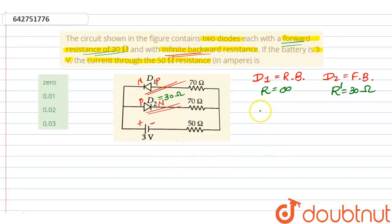So let's draw our final circuit. Our final circuit will be: this is 30 ohm, this is 70 ohm, this is 50, and this is 3 volt.